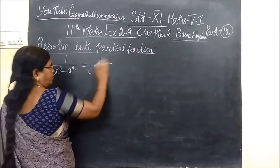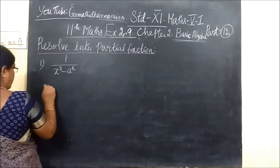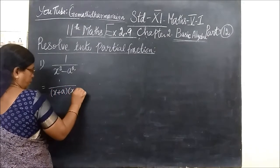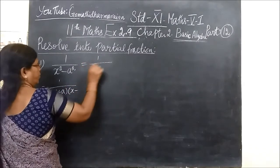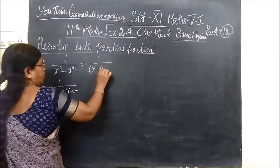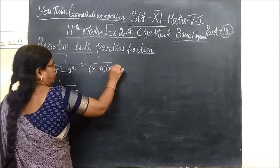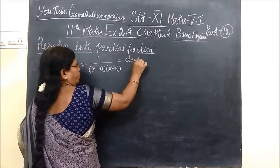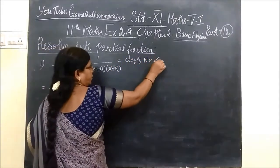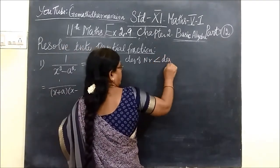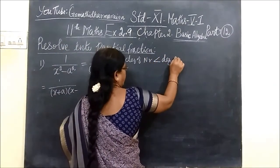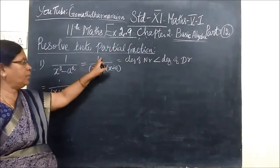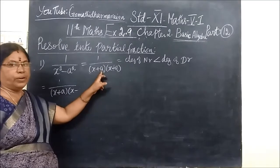A squared minus B squared means A plus B into A minus B. Here is the expression: A plus B into A minus B. This is the degree. Degree of numerator less than degree of denominator. Check it out — degree of numerator less than degree of denominator.